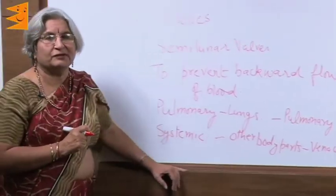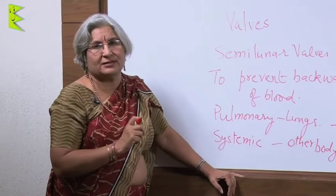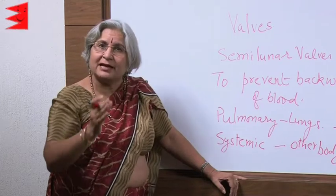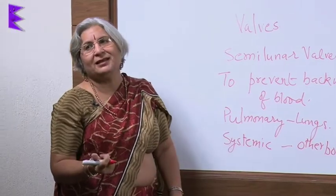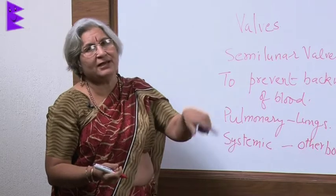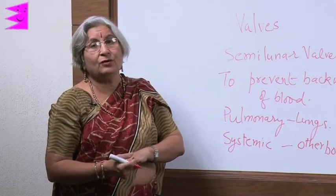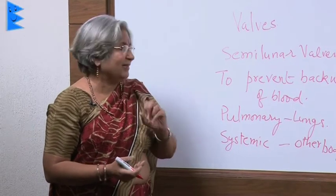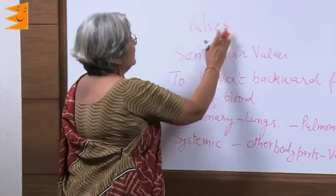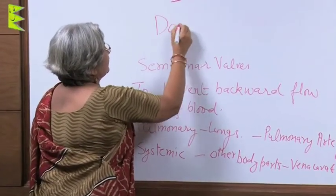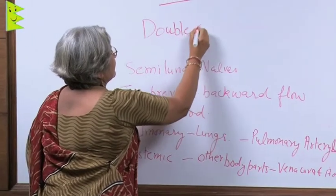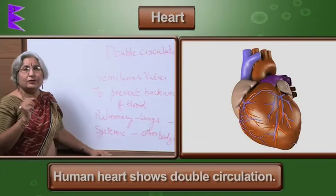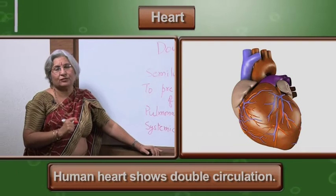Blood flows through the heart twice: first it comes to the right side, then goes to the lungs, then comes back to the left side, and from there goes to all body parts. Because blood passes through the heart twice, this type of circulation is called double circulation. The human heart shows double circulation.